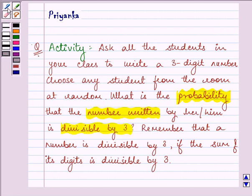And do you remember the divisibility test? A number is divisible by three if the sum of its digits is divisible by three.